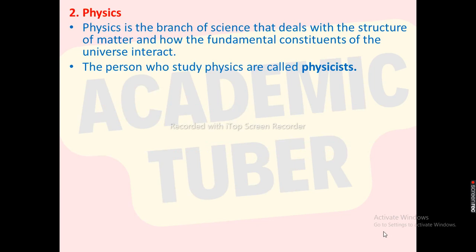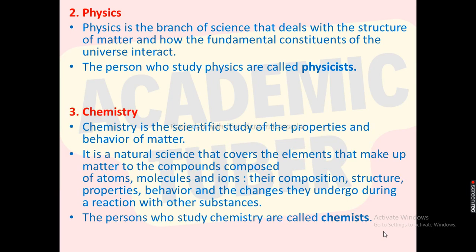Physics is the science that deals with the structure of matter and how the fundamental constituents of the universe interact. The persons who study physics are called physicists. The third branch is chemistry — it is the scientific study of the properties and behavior of matter. It is a natural science that covers the elements that make up matter, compounds composed of atoms, molecules, and ions, their composition, structure, properties, behavior, and the changes they undergo during a reaction with other substances. The persons who study chemistry are known as chemists.